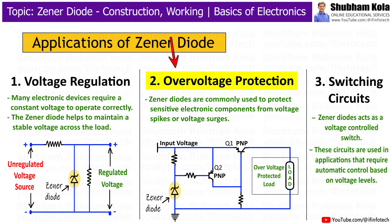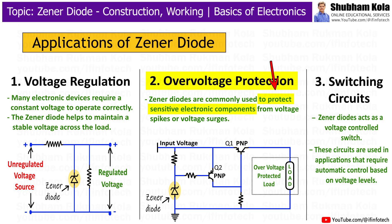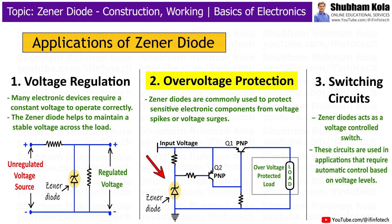Second is over-voltage protection. Zener diodes are commonly used to protect sensitive electronic components from voltage spikes or voltage surges. In an over-voltage protection circuit, the Zener diode is connected in parallel with the component to be protected. When the voltage exceeds the Zener voltage, the diode conducts and limits the voltage, preventing it from rising further.